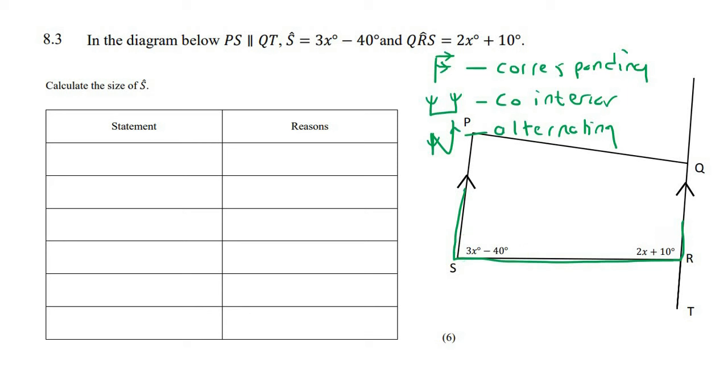So we could say that angle S plus angle R, or let's call it QRS instead, because if you just say angle R, they don't know if you're talking about this or this. So we say QRS, which means QRS. That should equal to 180. Why? Because these are cointerior angles, and the reason is that PS is parallel to QT.